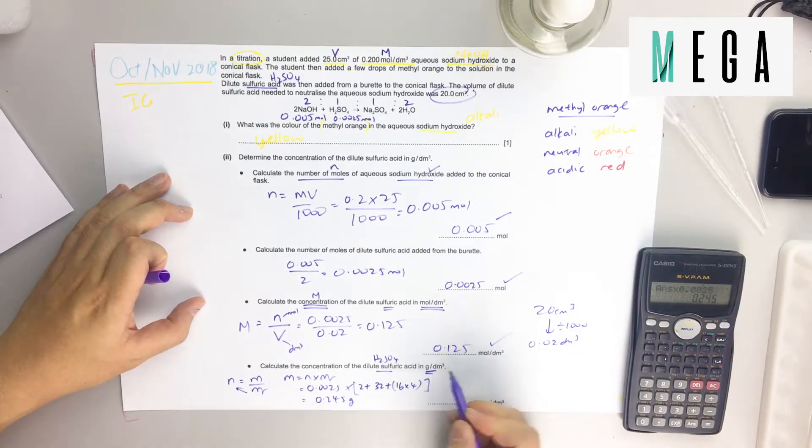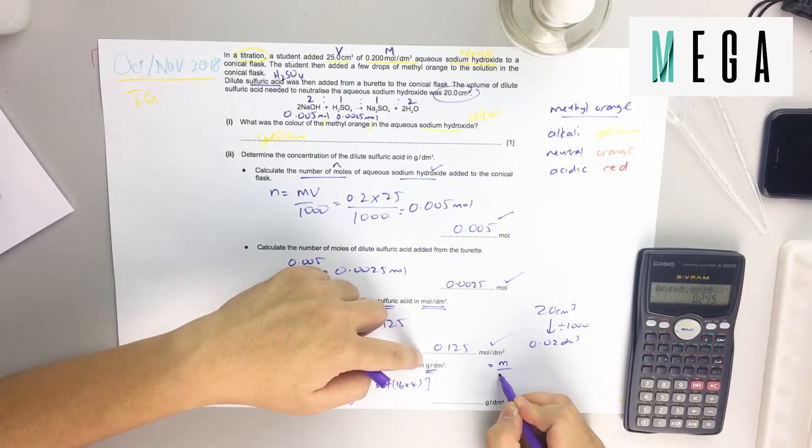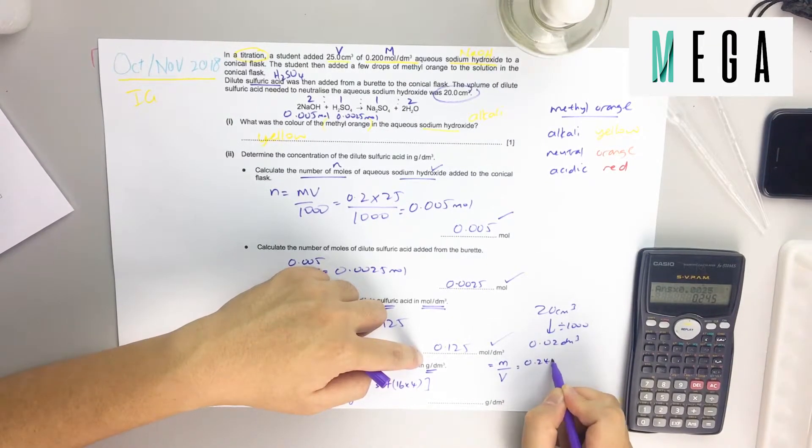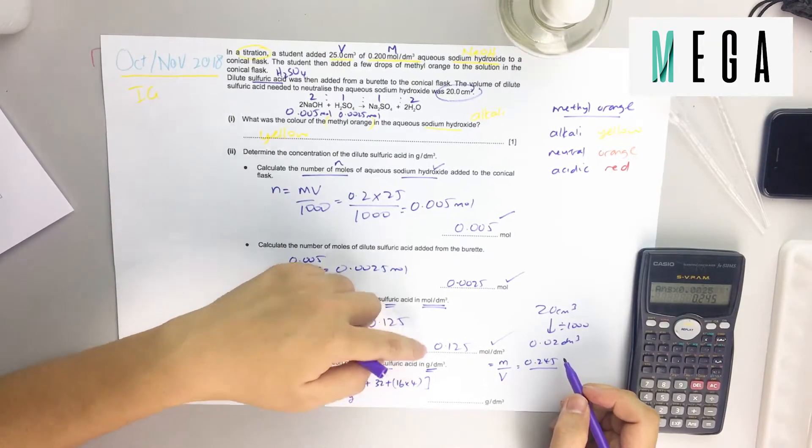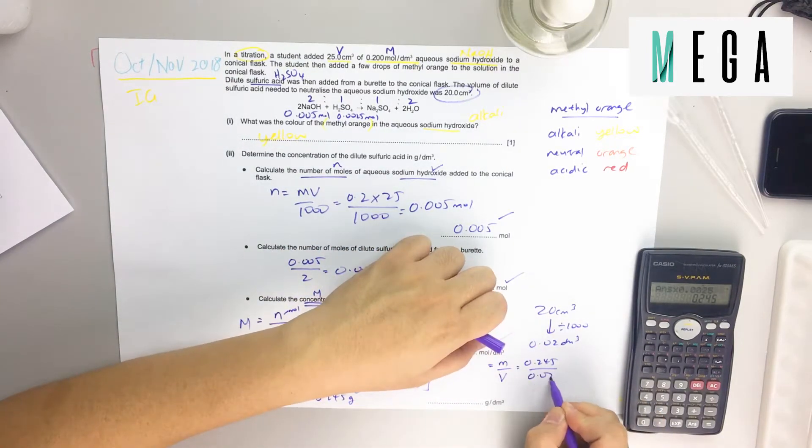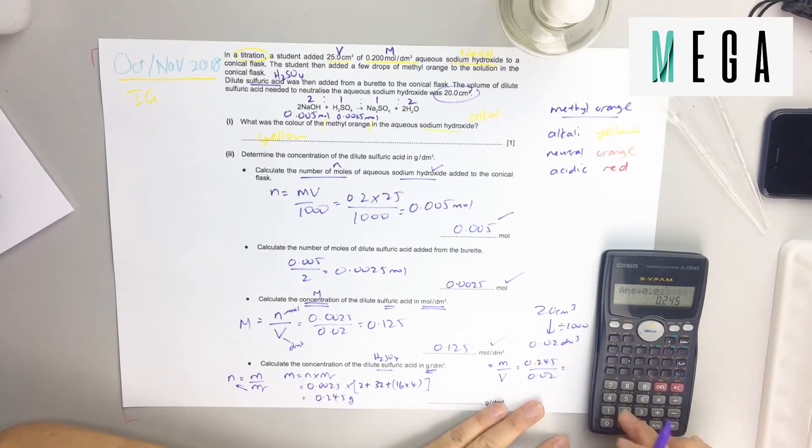Since you have the grams already, we need grams per dm³. Just put in grams divide the volume: 0.245, the volume same 20 cm³ which is 0.02. Use your calculator.